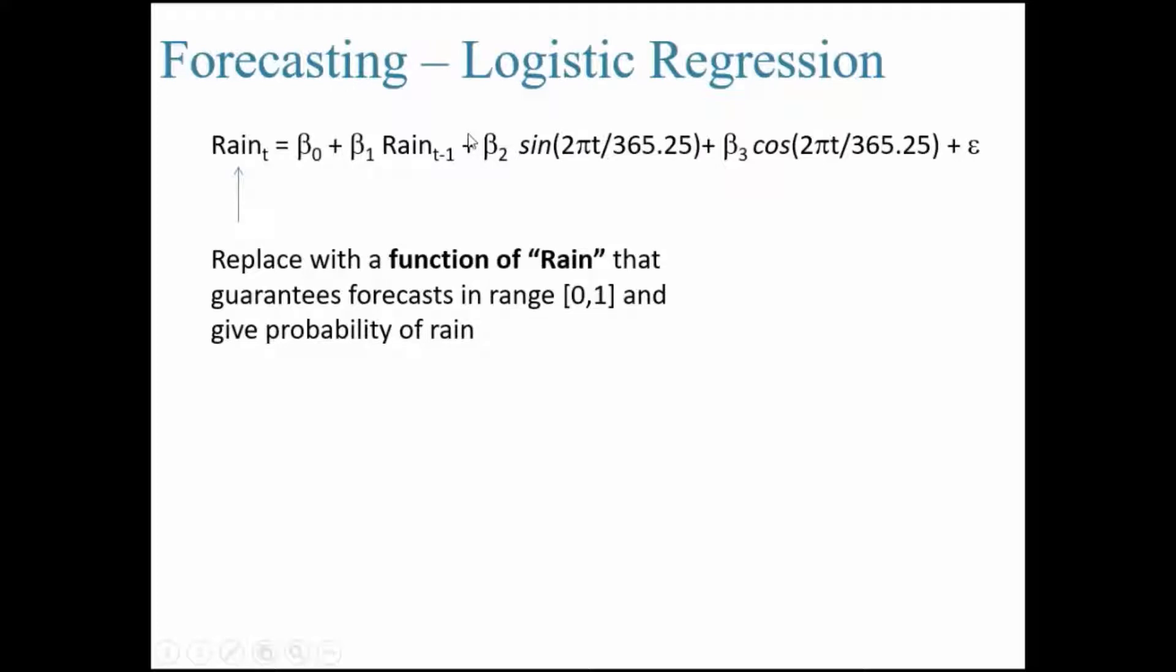Now let us proceed further. These two would capture the seasonality. If you notice here, we need to employ logistic regression because the output that we want to know is will it rain or will it not rain? 0 means it will not rain, 1 means it will rain.